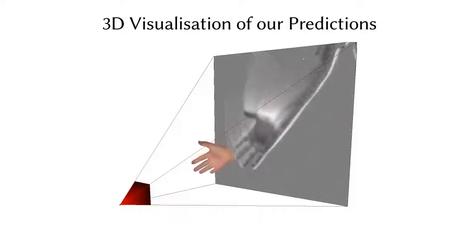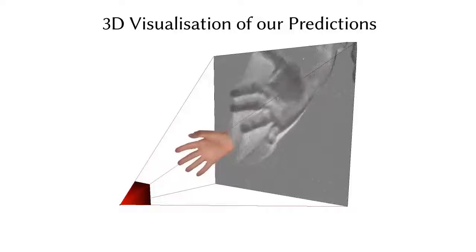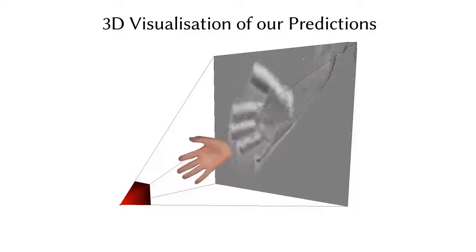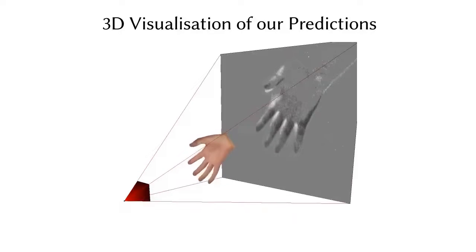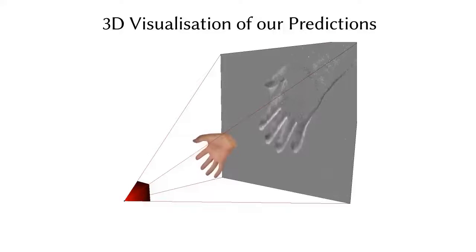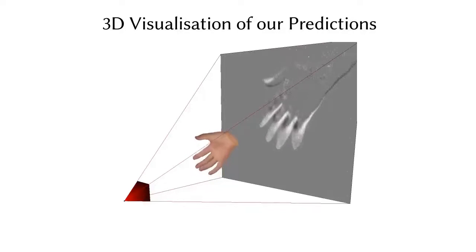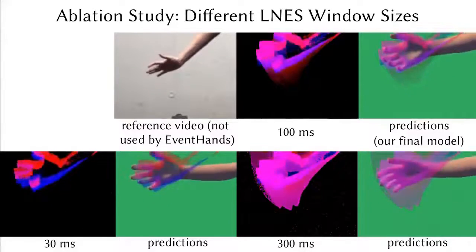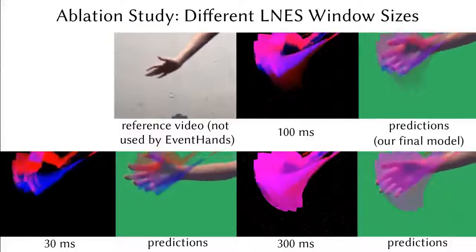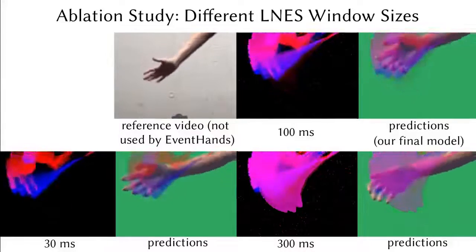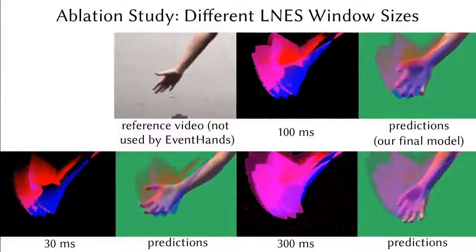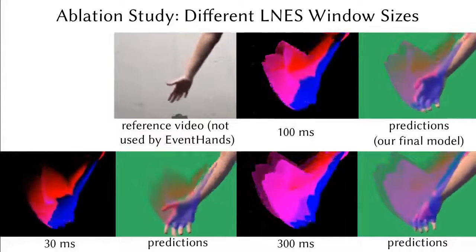Here we show our hand pose predictions from other views to assess the quality of predictions in 3D. Our LNES representation allows for very long window sizes, such as 300 milliseconds, without significant degradation of prediction quality. We find that a window size of 100 milliseconds leads to the highest accuracy while maintaining event history long enough to capture natural hand motions without artifacts.